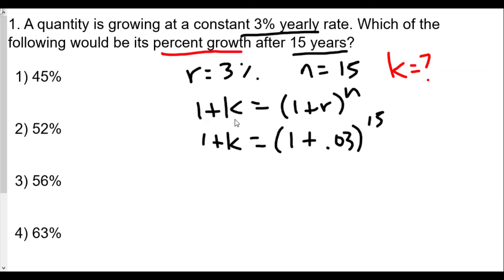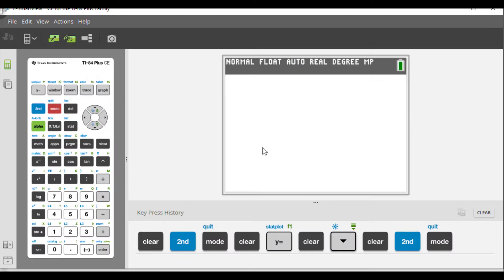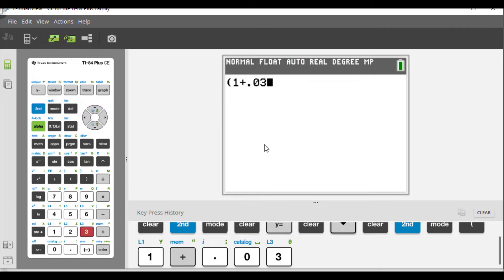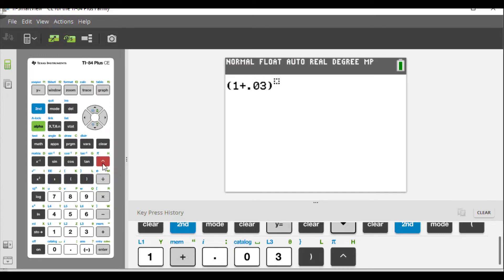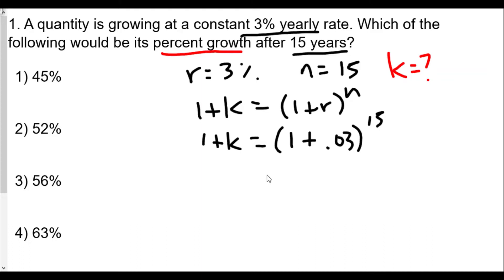Now we bring out a graphing calculator to find the value of 1 plus 0.03 raised to the 15th power. So let's take our graphing calculator and we're typing in this case, parenthesis 1 plus 0.03 raised to the 15th power. And we get 1.557967417. Let's write 1.557967. That's plenty.